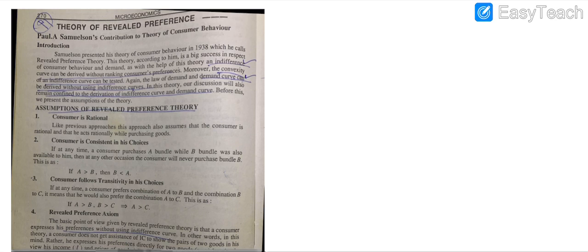Third, the consumer follows transitivity in choice. What is transitivity? If the consumer prefers A over B, and then prefers B over C, then his attitude toward the commodities will be that he will prefer A over C as well.